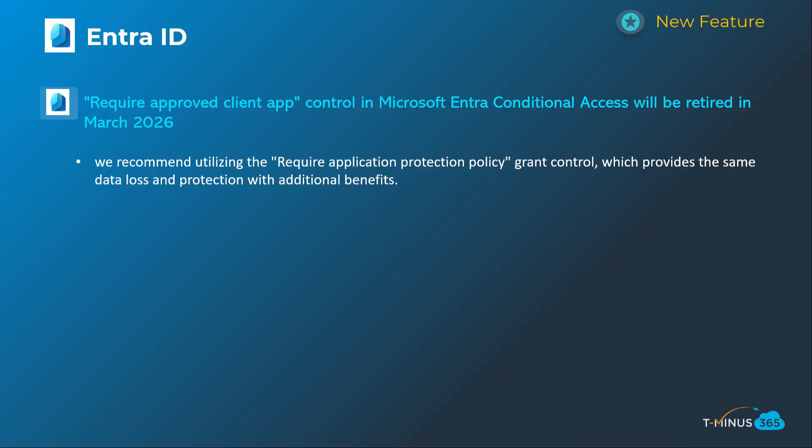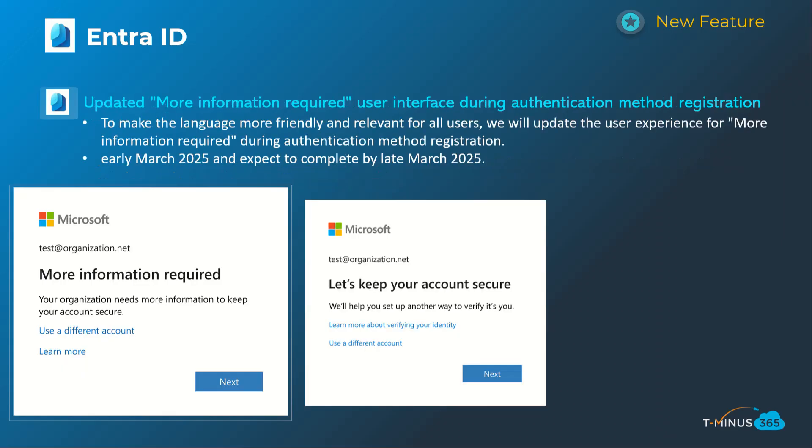Shifting into the security section, the first one is an end-of-life announcement for a setting within Conditional Access policies — specifically the 'Require approved client app' setting used in Intune MAM policies. They're shifting all that functionality into the 'Require application protection policy' setting. You may have leveraged this in the past to redirect users from setting up Outlook on the native mail client. The end-of-life date is March of 2026.